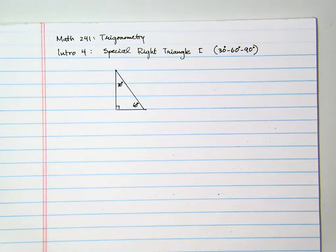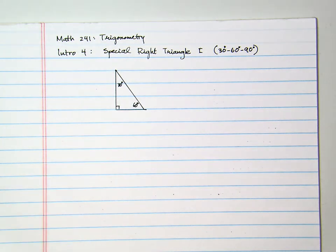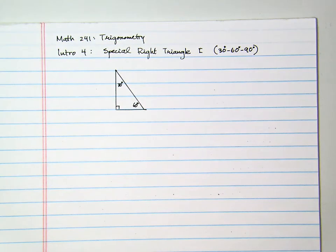The following is the fourth introduction to Math 241 Trigonometry class. In this section, we will discuss special right triangles — the 30, 60, 90 degree triangle. This is a special right triangle because we see it quite commonly in trigonometry. We will try to find the ratio of the three sides of this triangle, and using similar triangles later on, we will be able to expand this even further.